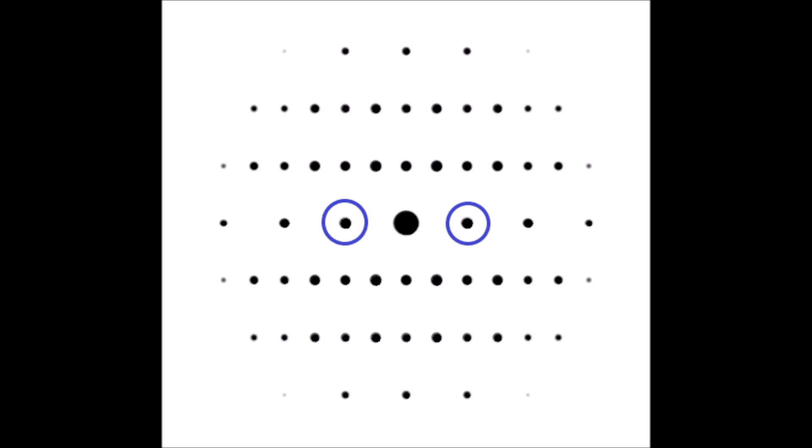And we can tell how well aligned with the zone axis we are by looking at the diffraction pattern. So if I am well aligned with the zone axis, what I'm going to see is that if I take two Bragg spots, meaning a Bragg spot and its opposite.